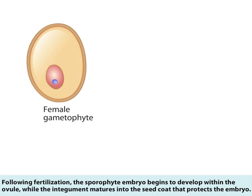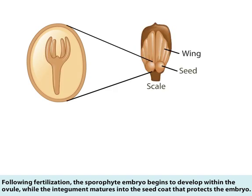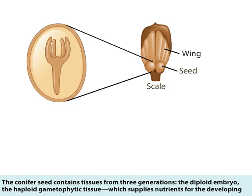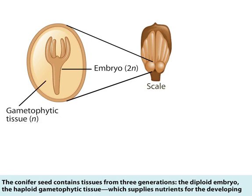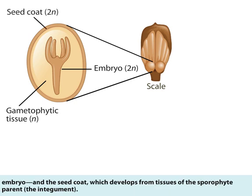Following fertilization, the sporophyte embryo begins to develop within the ovule, while the integument matures into the seed coat that protects the embryo. The conifer seed contains tissues from three generations: the diploid embryo, the haploid gametophytic tissue which supplies nutrients for the developing embryo, and the seed coat, which develops from tissues of the sporophyte parent, the integument.